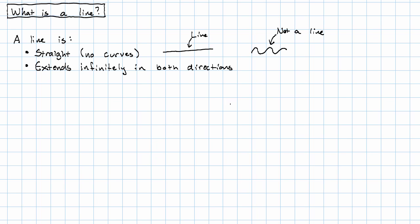Now obviously when we draw a line, we don't draw it extending infinitely. We indicate that it extends in both directions by writing arrows on the end. What if it doesn't extend infinitely in both directions? If it only extends in one direction, that's called a ray.